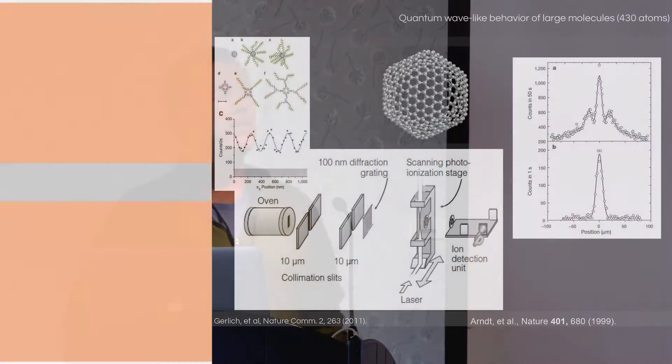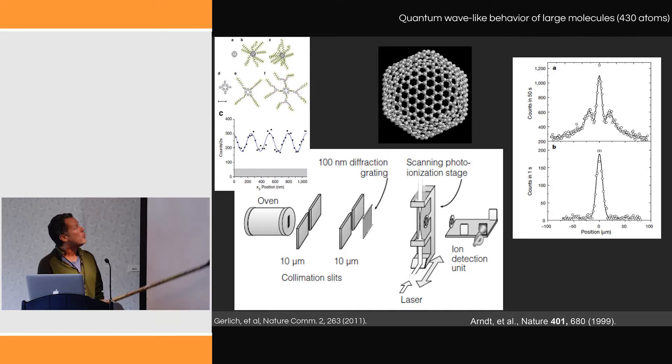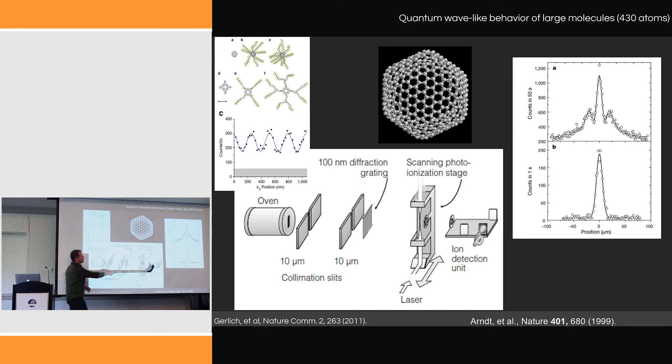From the other direction, from the microscopic world, there were people in Zeilinger's lab in Vienna doing matter wave interferometry with small particles. You can start with photons, electrons, and neutrons, see interference, and then think about how big of a particle you can use. Eventually they were putting buckyballs in their interferometers and seeing interference fringes appear, and ultimately bigger molecules—I think 430 atoms—seeing the matter wave interference.